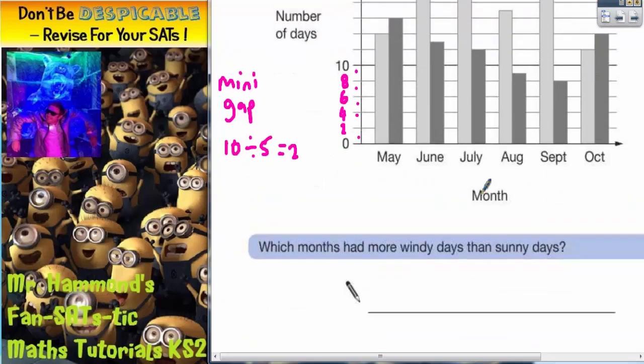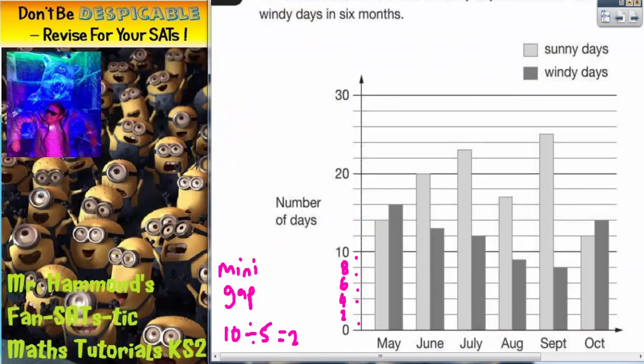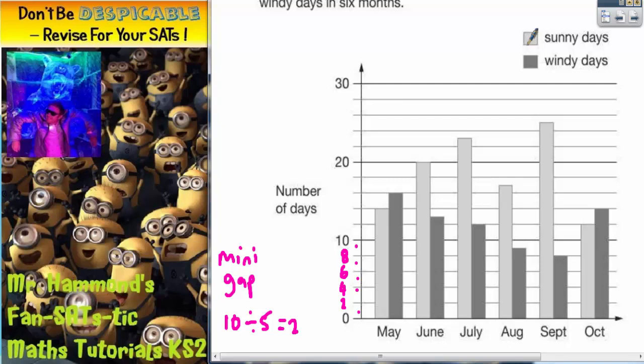So let's look at what questions we've got. Which months had more windy days than sunny days? So we're looking for which months had more windy days than sunny days. So windy days is dark grey. So the dark grey bar has got to be bigger than the light grey bar.